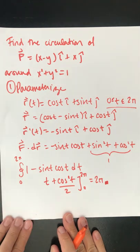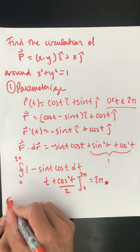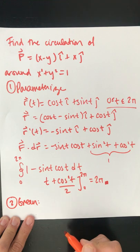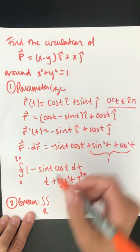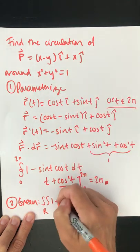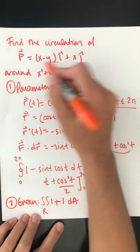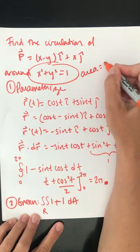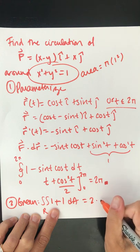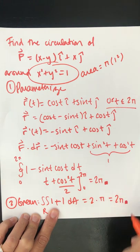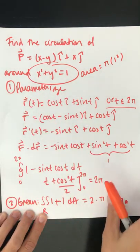Now if I want to find the circulation around, I could also use Green's theorem. Green's theorem says it's going to be the double integral over the region of dn dx minus dm dy. I could parameterize, but my area is a circle. If I have a unit circle, my area is pi times 1 squared, so I'm just going to accumulate 2 over the circle, so this is just 2 times pi, which is 2 pi.